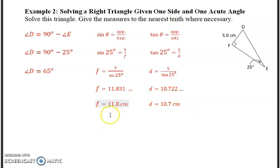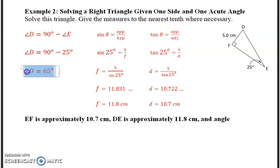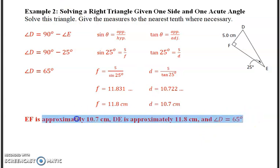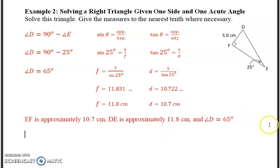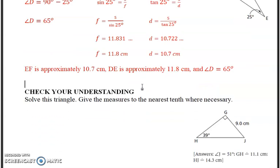So we can write a sentence if you want. EF is approximately 10.7 centimeters, or you can say the hypotenuse is approximately 11.8 centimeters, and angle D is equal to 65 degrees. So that's all the information that we have. We found all the measures. That's it for example 2.